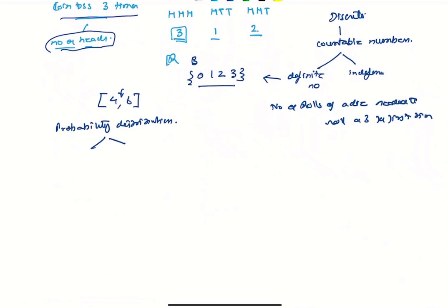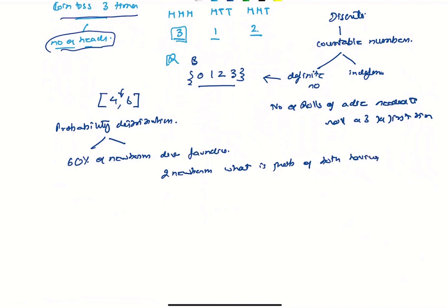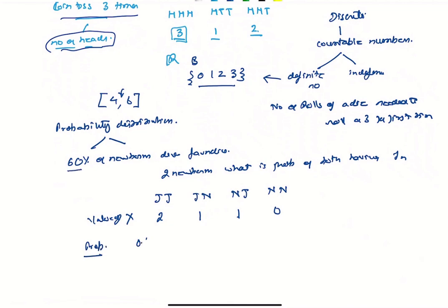For example, 60% of newborns develop jaundice. If we pick two newborns, what is the probability of both having jaundice? The possible outcomes when picking two babies are: both have jaundice, first has jaundice and second doesn't, first doesn't and second does, or neither has jaundice. So X can be 0, 1, or 2. The probability of both having jaundice is 0.6 times 0.6.